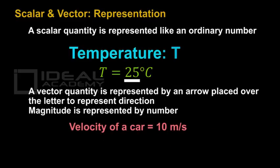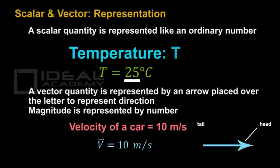A vector quantity is represented by an arrow placed over the letter to indicate direction. For example, velocity can be written as V with an arrow over it, equal to 10 meters per second. Whenever you want to represent a vector quantity, put an arrow over the letter. Diagrammatically, a vector is represented by an arrow — this is the head and this is the tail of the arrow.